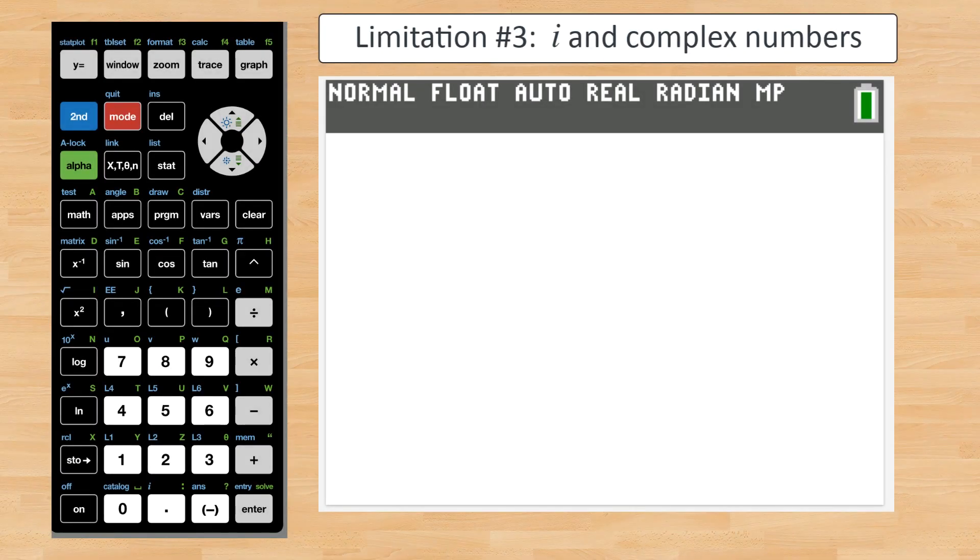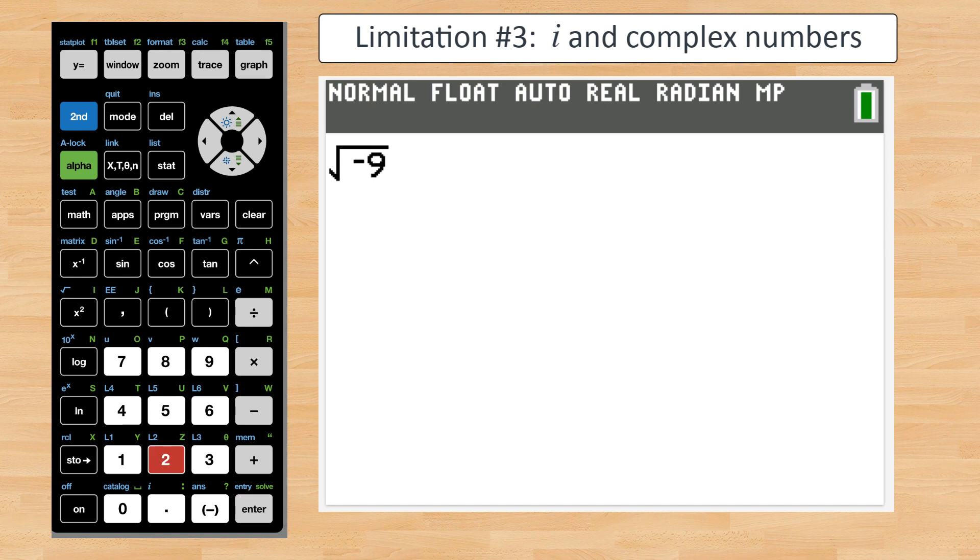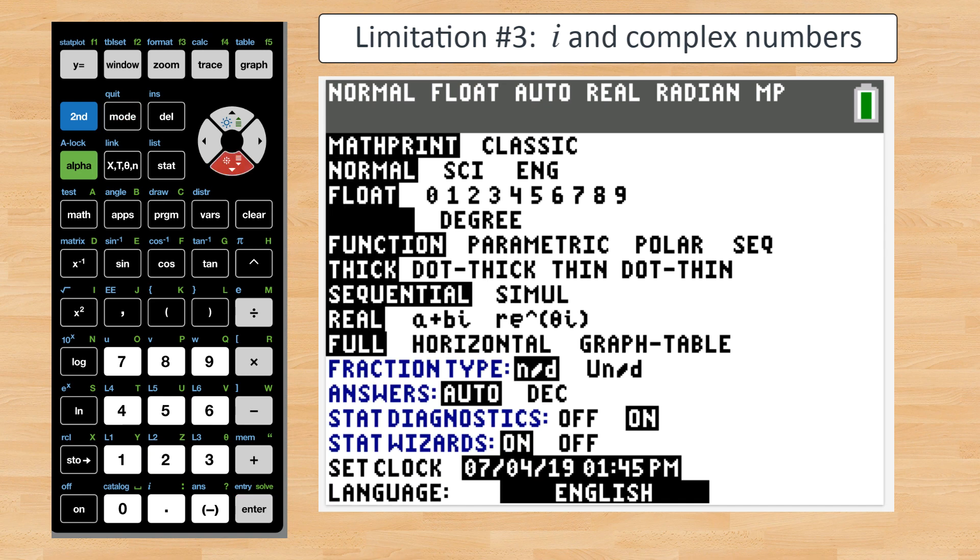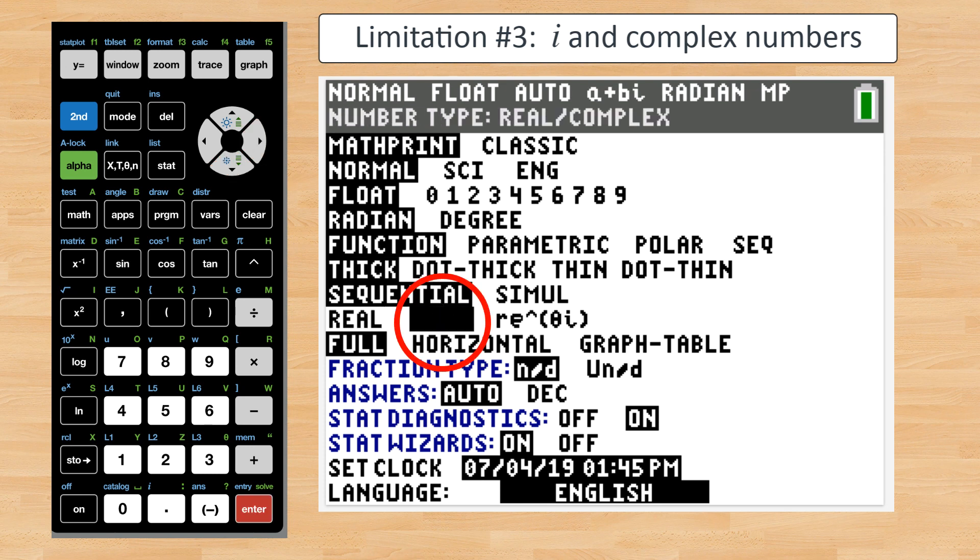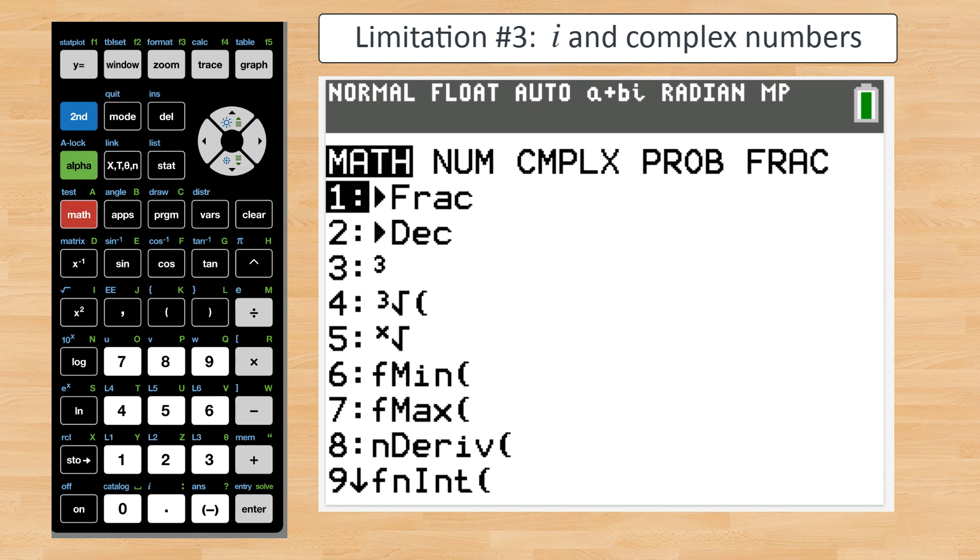Limitation number three: complex numbers. If you don't know what imaginary numbers are, you can skip this. The TI-84 still doesn't do a good job at working with the imaginary number i. If you have the mode set on your calculator to handle complex numbers, i squared is negative 1 and if you add 3 to that you get 2. Makes sense, right? Negative 1 plus 3 is equal to 2.